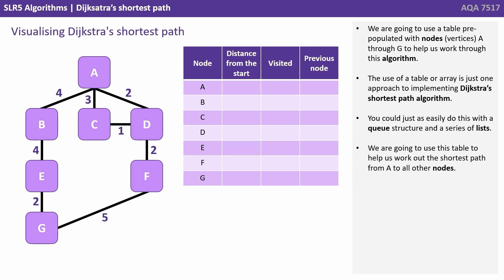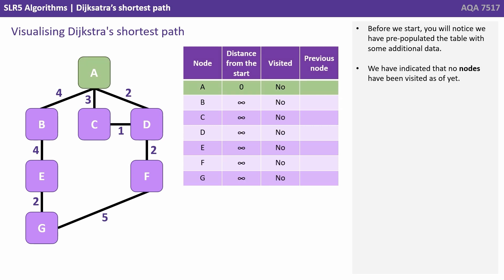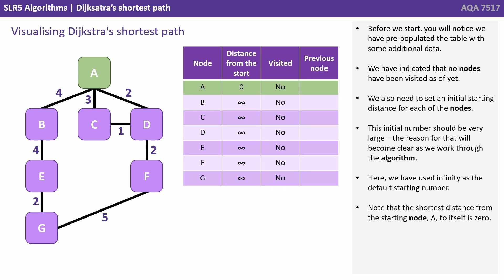We're going to use this table to help us work out the shortest path from A to all other nodes. You'll notice we've pre-populated the table with some additional data: no nodes have been visited as of yet. We also need to set an initial starting distance for each of the nodes — this initial number should be very large, and the reason for that will become clear as we work through the algorithm. Here we've used infinity as the default starting number. Note that the shortest distance from the starting node A to itself is obviously zero.